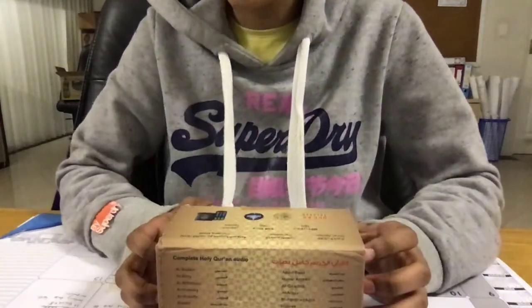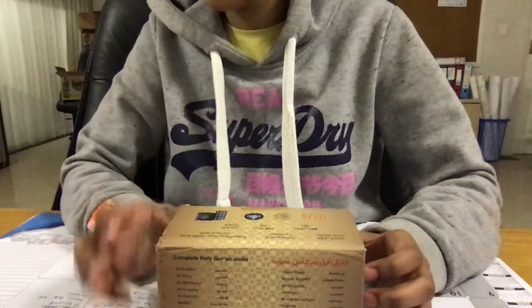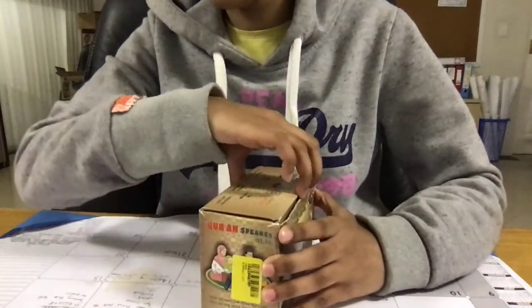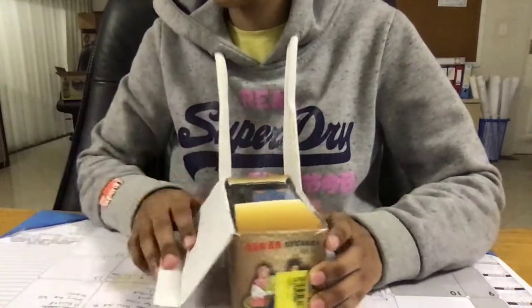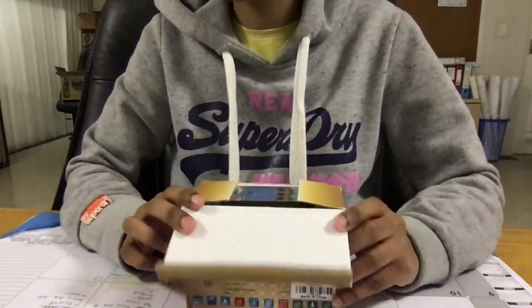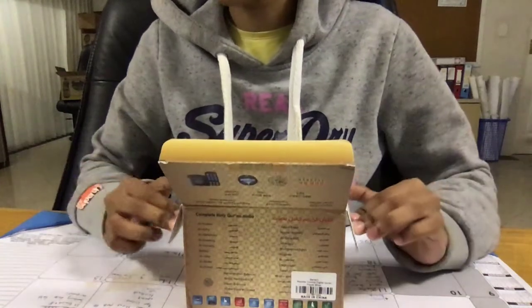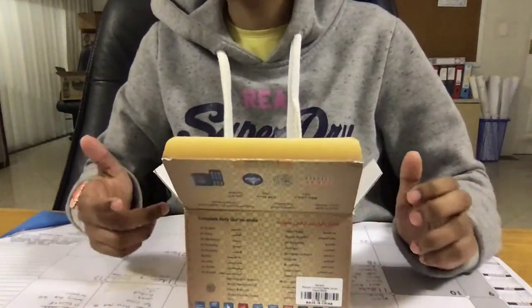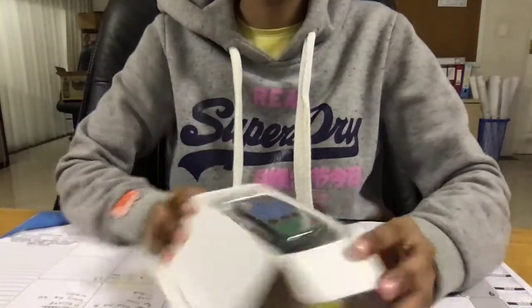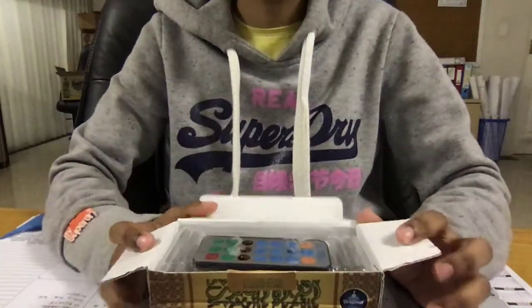It actually has 20 reciters and it comes in 15 languages, gold and silver. It has the tafseer of the Quran, has the 99 names of Allah, teaches you how to read Salah, and it has a few nasheeds. Okay, so first let's open the box.